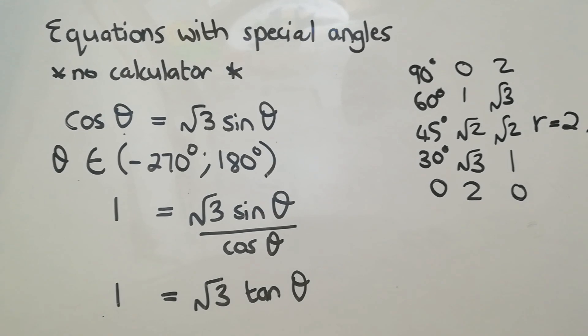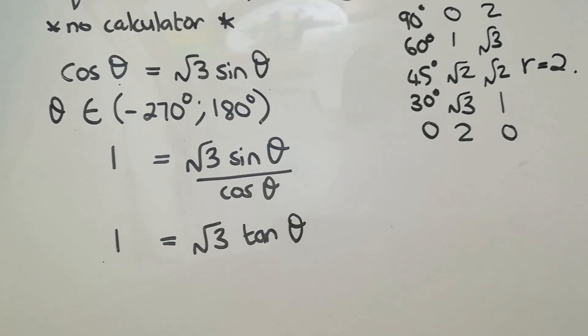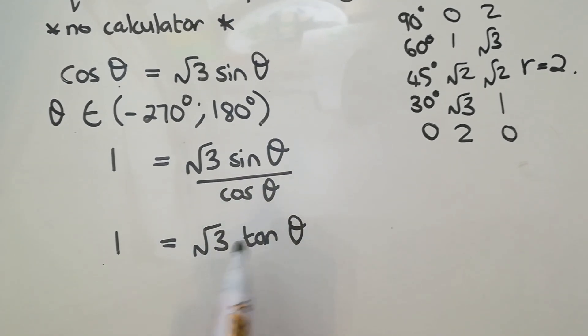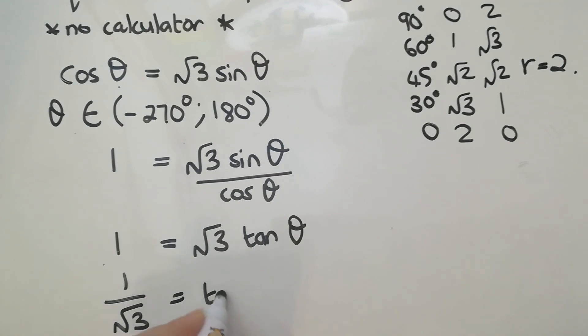The way I'm going to use special angles now has got to do with the fact that I need to isolate the trig function, which is the tan theta. So doing that, this is going to be divided on the other side. So I'm going to have 1 over root 3 equals tan theta.